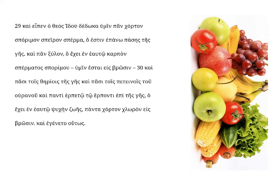Every tree — ha, which, that's the relative pronoun — has, eche, in itself, karpan, the fruit. Karpan is masculine, singular, and accusative. The fruit, spermatos sperimu, of its seed-bearing seed.